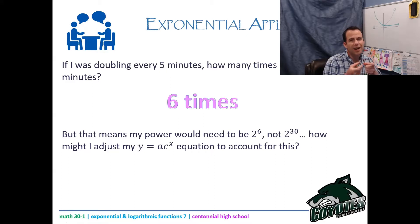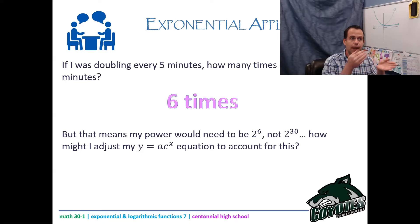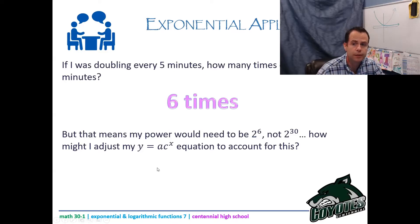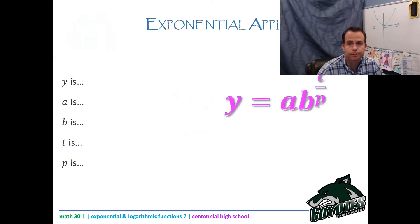The time it takes to do something is called the period, if you think back to our trig units. So here is our tweaked formula: y = a · b^(t/p).